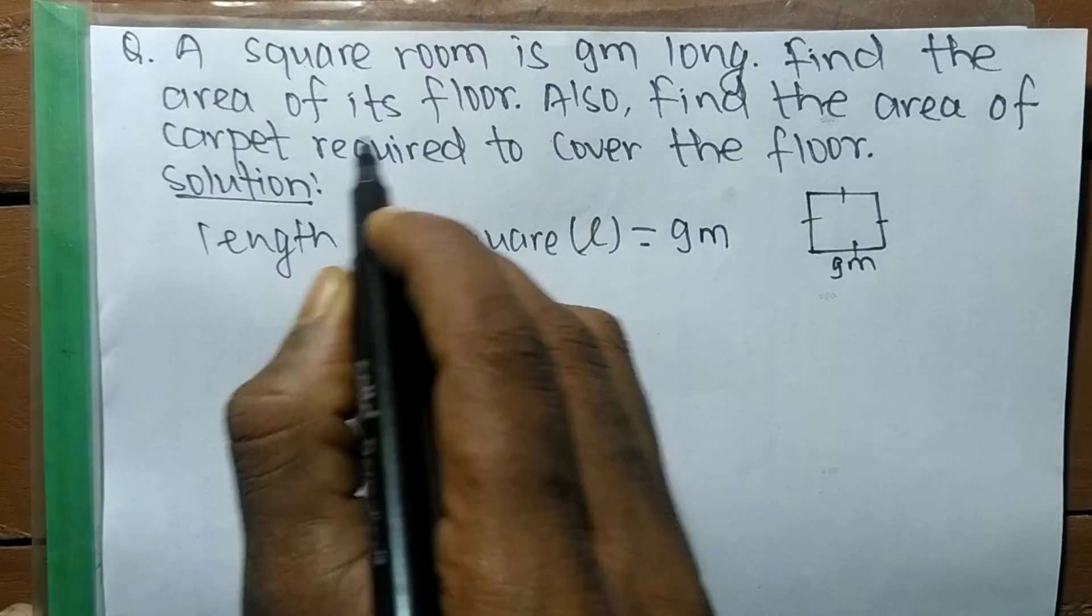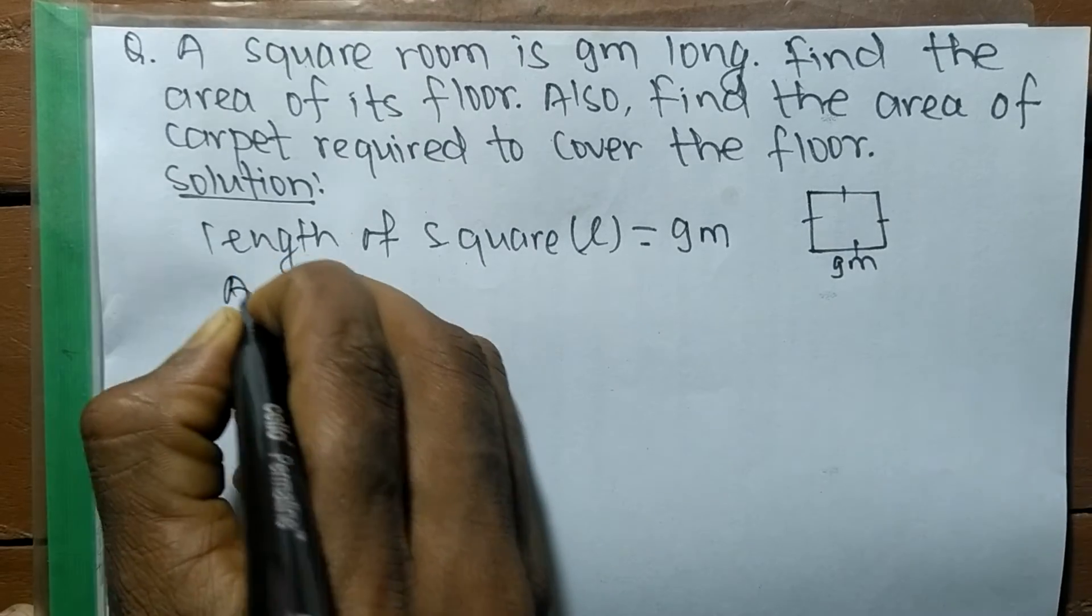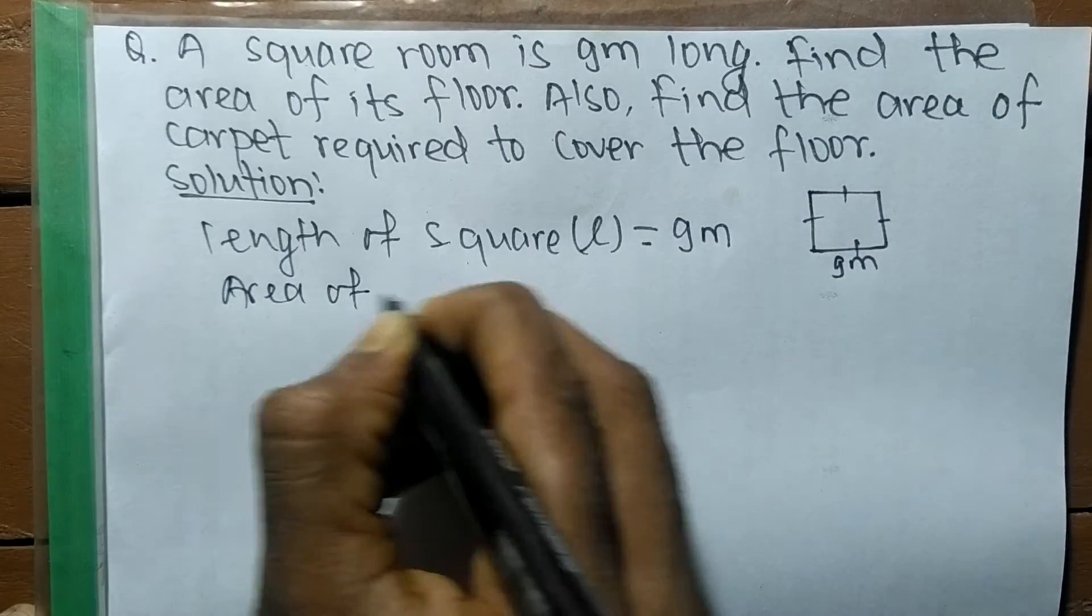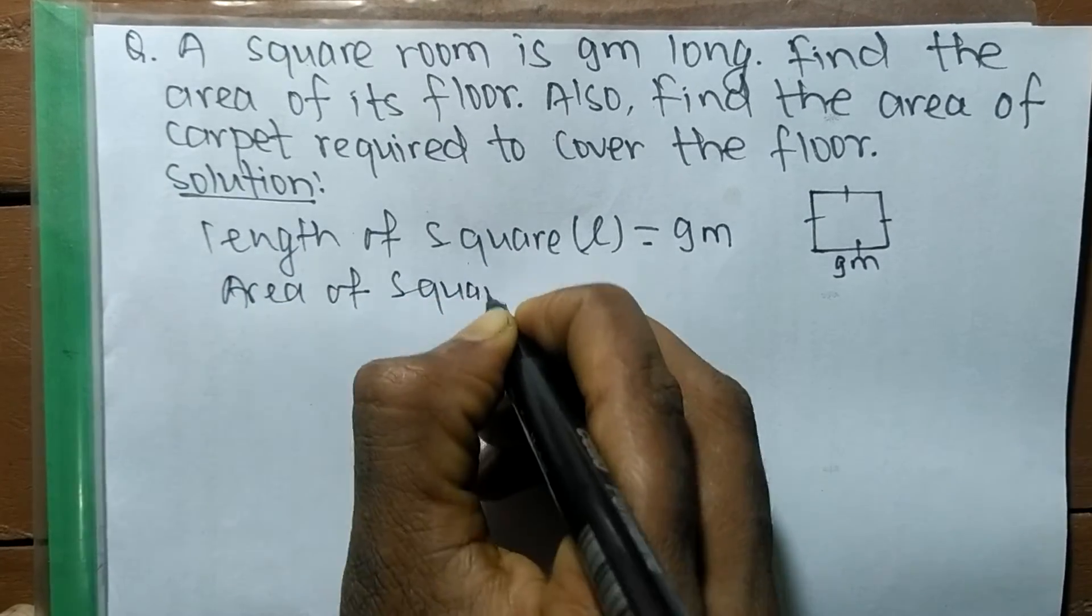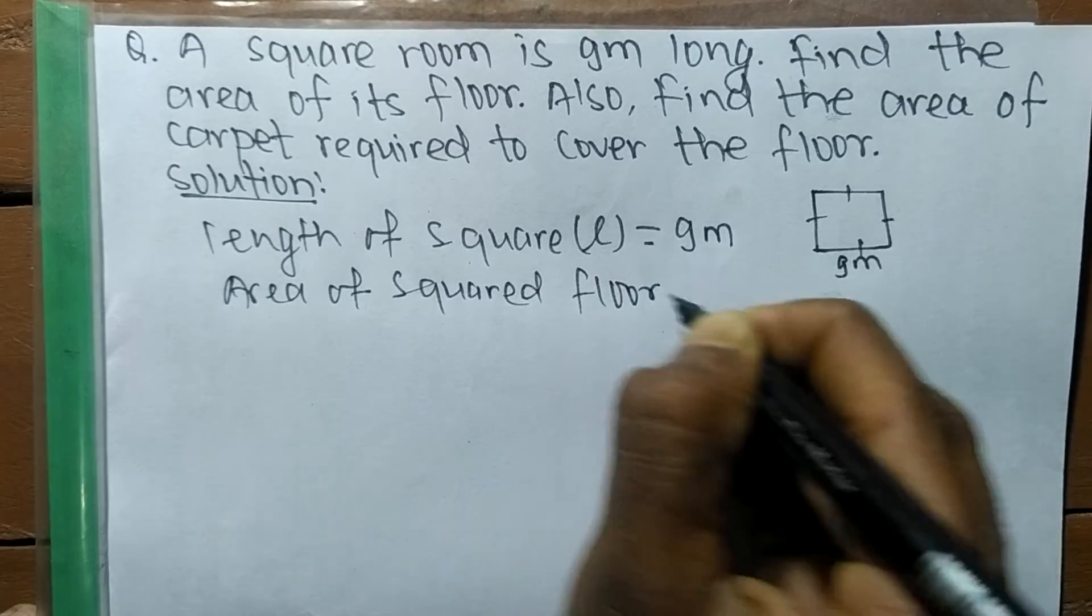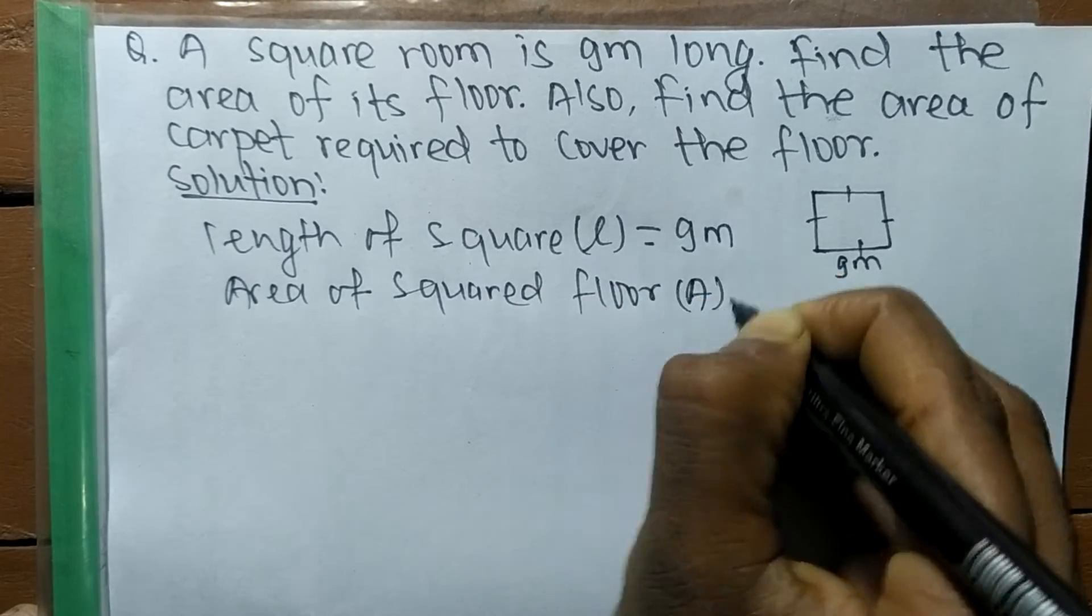We have to find out the area of the floor. So area of a square floor, we denote it by A, is equal to L².